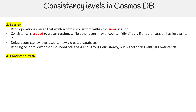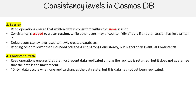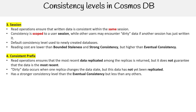For consistent prefix, read operations ensure that the most recently replicated data among the replicas is returned, but it does not guarantee the data is the absolute most recent. Dirty data occurs when one replica changes the data state but that data has not yet been replicated to others. It has a stronger consistency level than eventual consistency, but less than any other level.